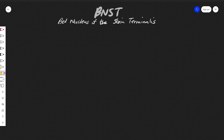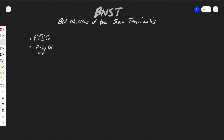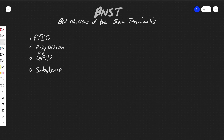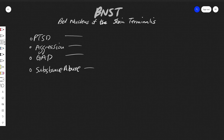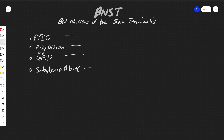Some related disorders include PTSD, aggression, generalized anxiety disorder, and substance abuse. These all make sense given the connections we discussed. They can also be mapped to specific circuit dysfunctions. There's a very good overview paper listed in the Google Docs titled something like 'Overshadowed by the Amygdala: Looking at the Bed Nucleus of the Stria Terminalis' — it's a great overview.